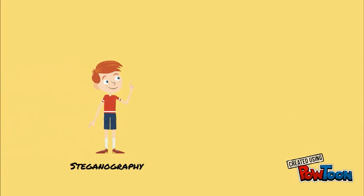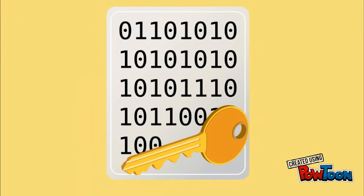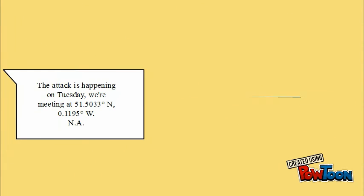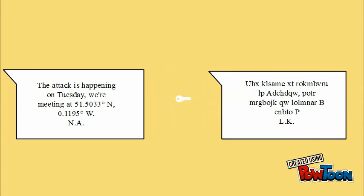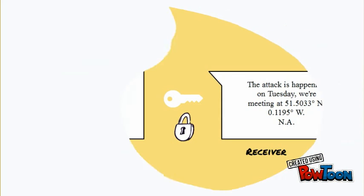However, in order to talk about steganography, first we have to consider its big brother, cryptography — the science of writing in secret codes. Basically, cryptography makes messages nonsensical to the casual reader by encrypting them using a set of rules which are known by both the sender and the receiver of the message, and are used to encrypt and decrypt the message.